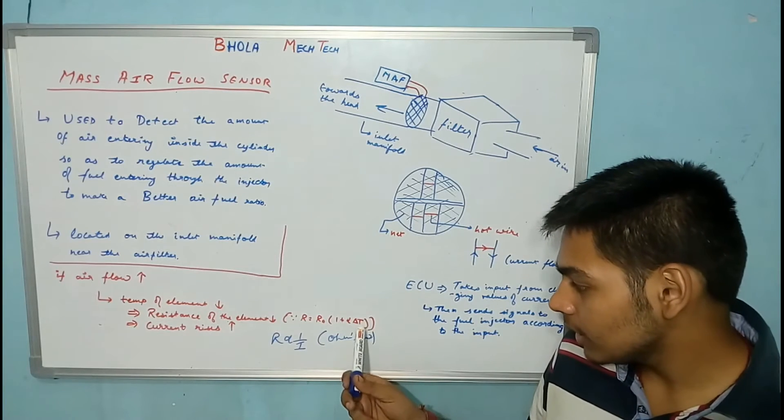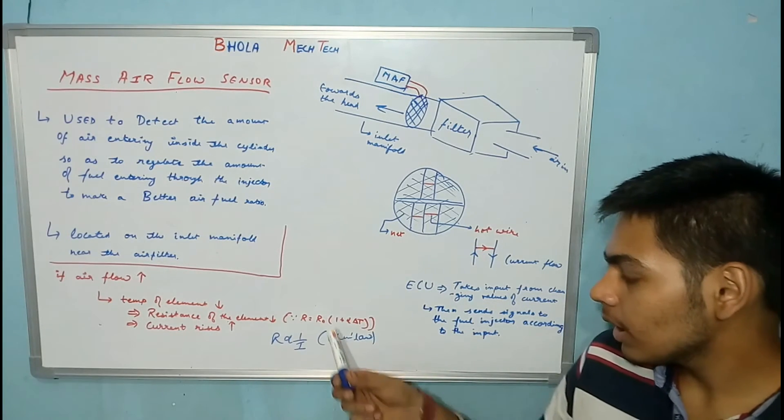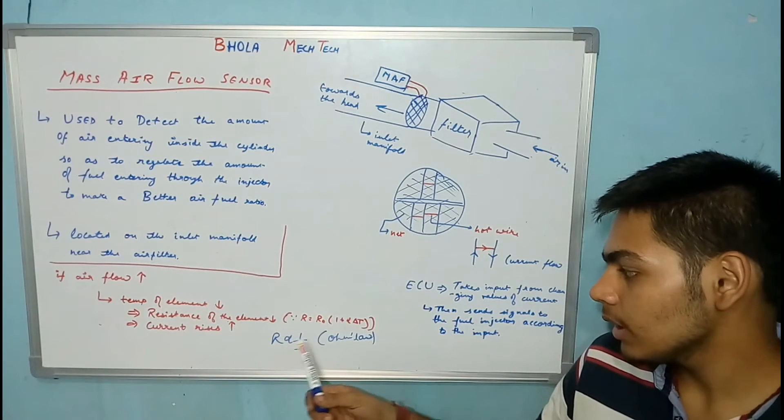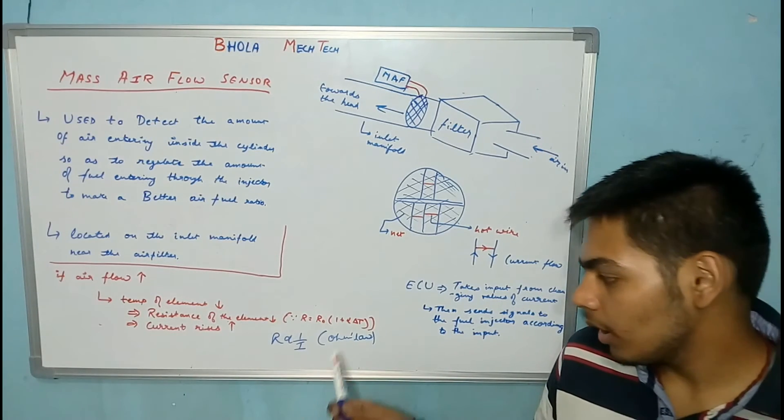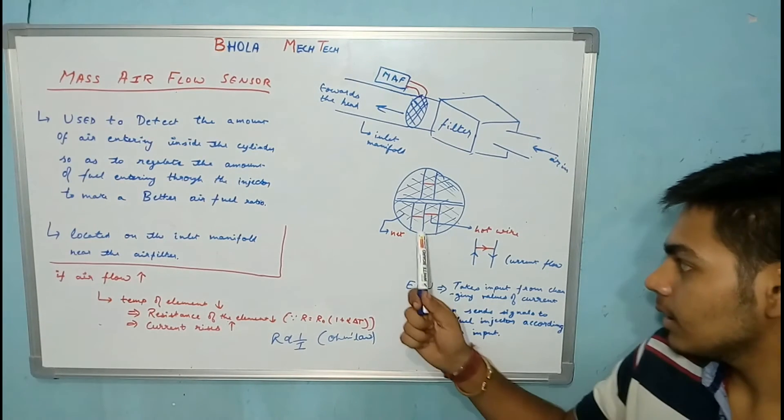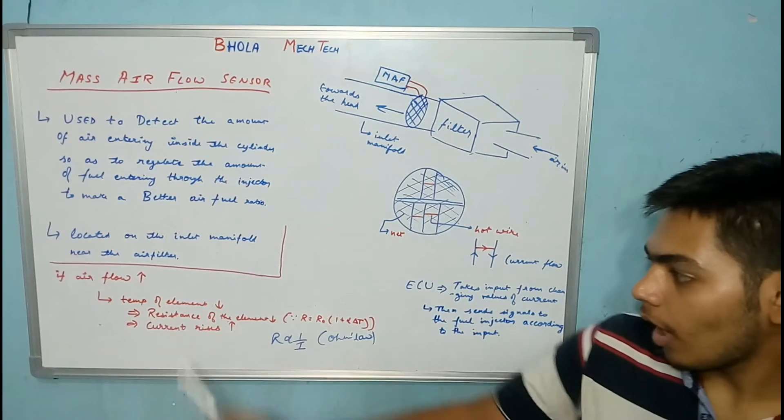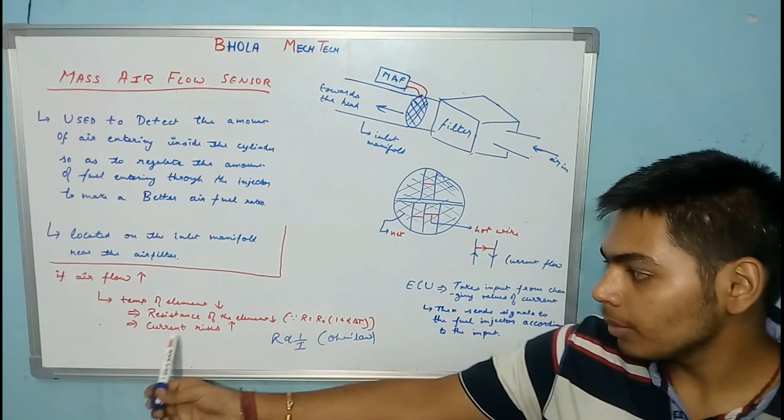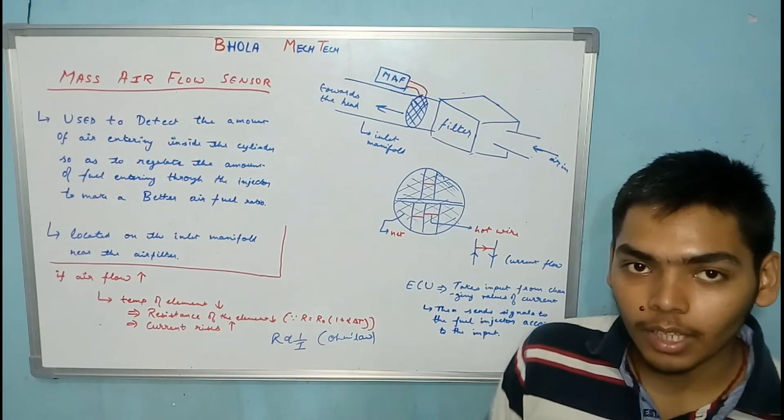Since temperature decreases, R will also decrease. Since the resistance decreases, the current will increase because R is inversely proportional to I in Ohm's law, so current rises. When current rises through this arrangement, we have converted the air flow into an electrical signal that is given by the current.